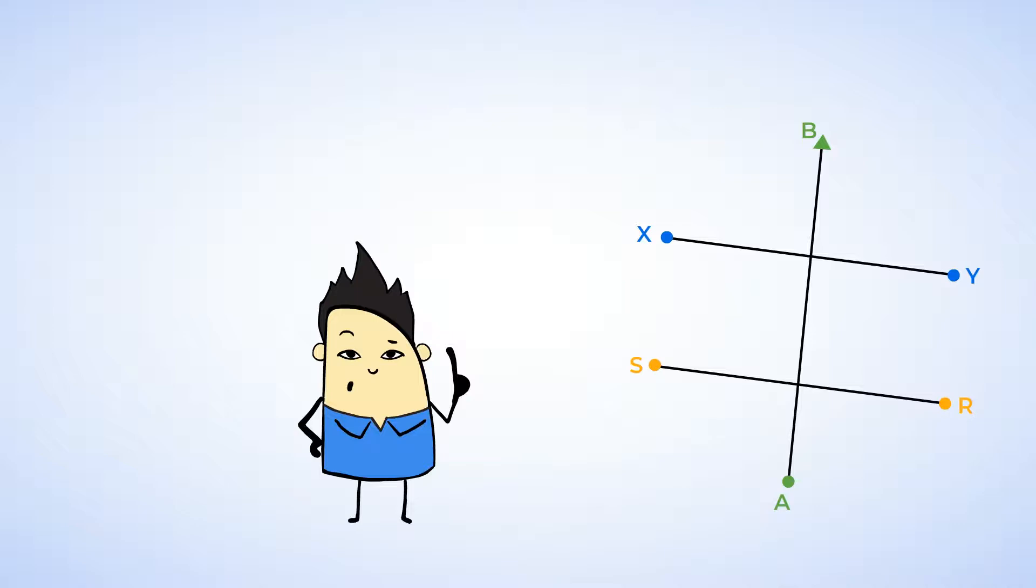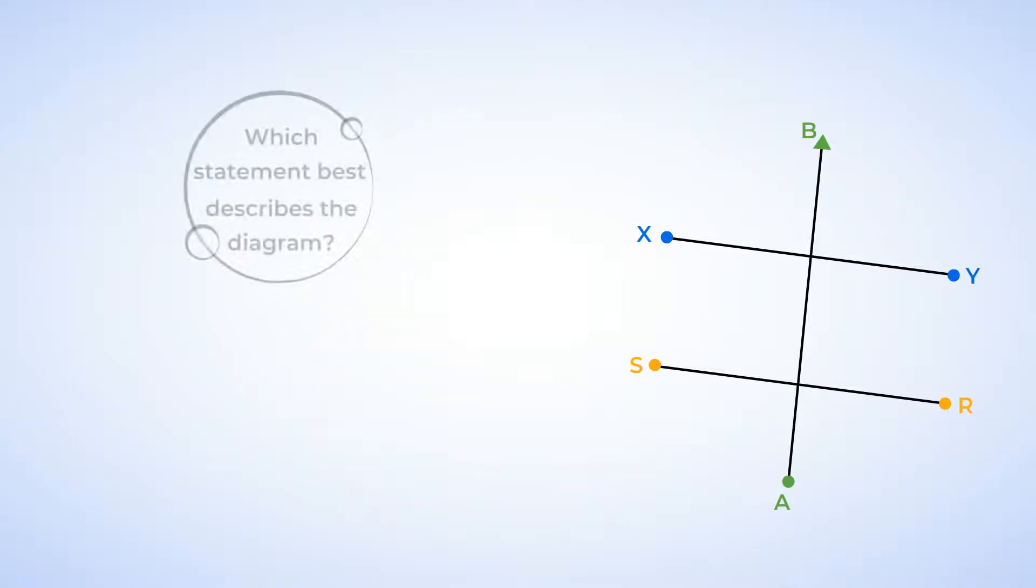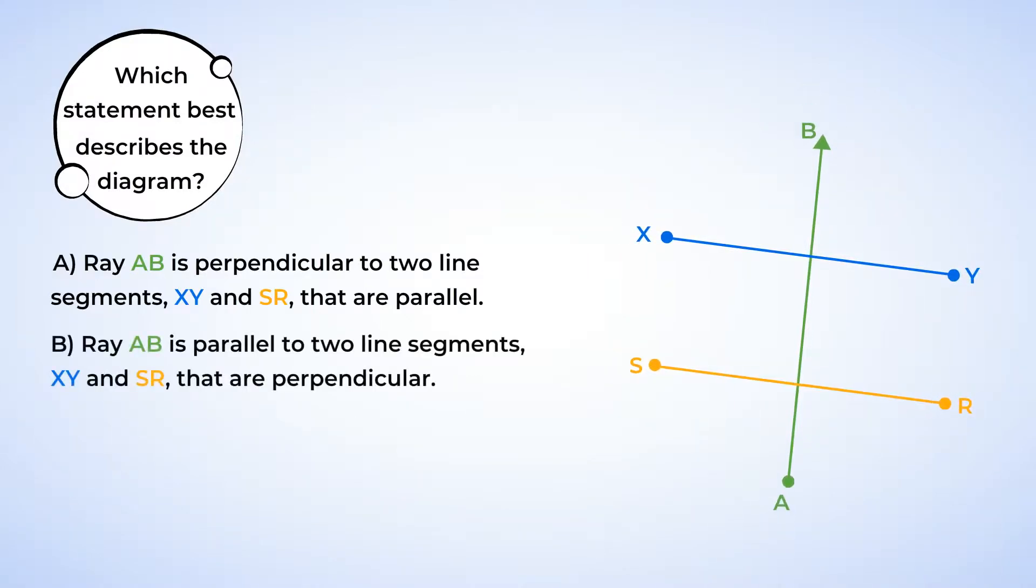What do you say we finish up with a mighty challenging problem? Which statement best describes the diagram? A. Ray AB is perpendicular to two line segments, XY and SR, that are parallel. B. Ray AB is parallel to two line segments, XY and SR, that are perpendicular. C. Line segment AB is perpendicular to two lines, XY and SR, that are parallel.